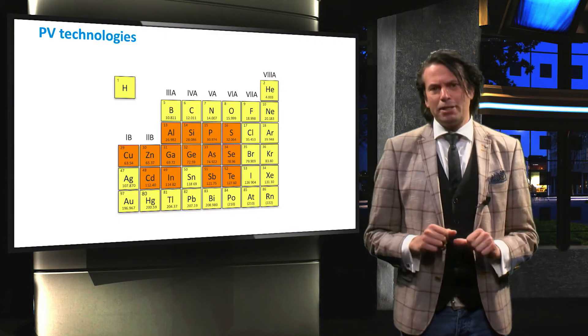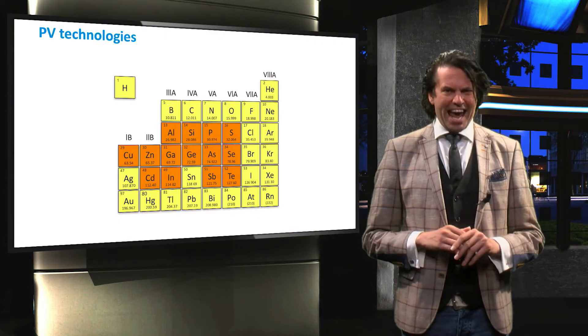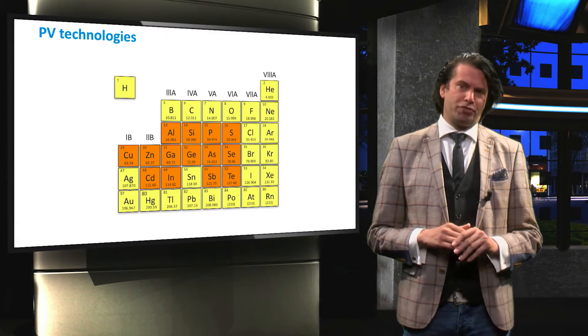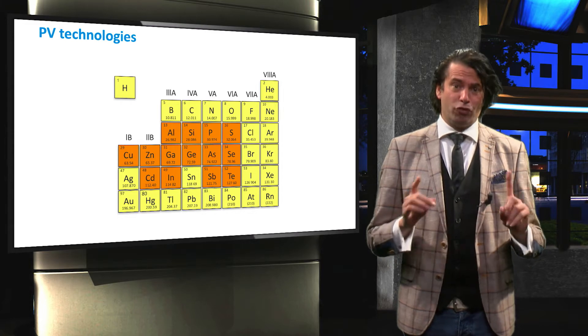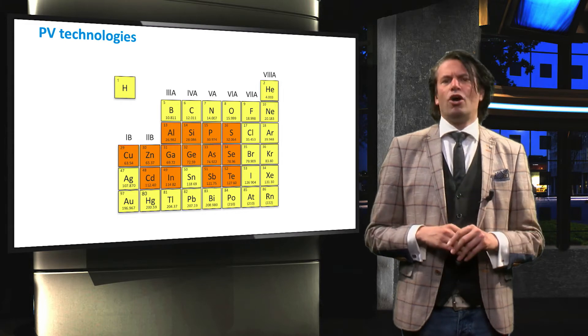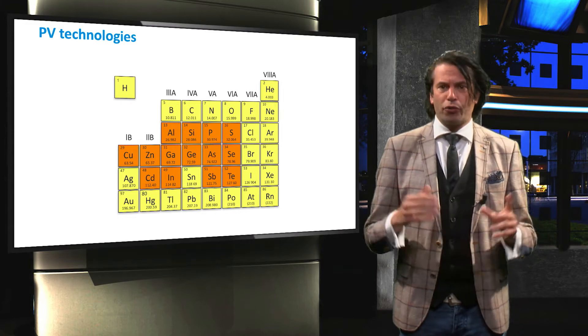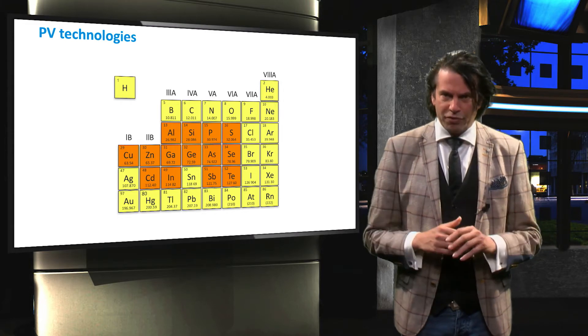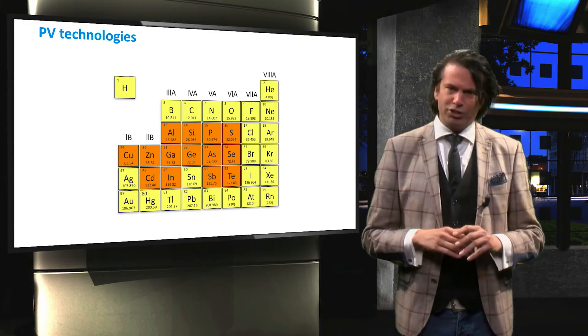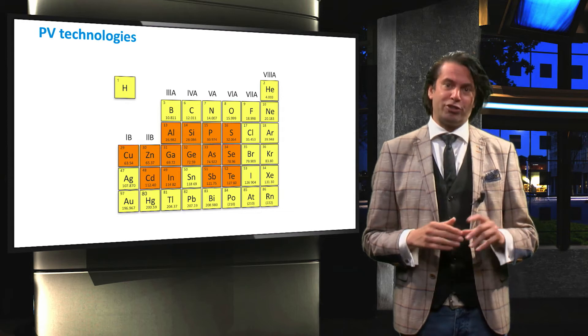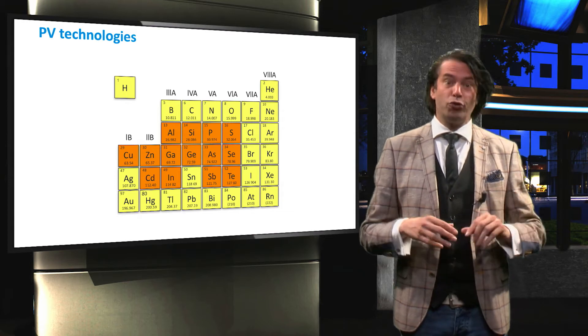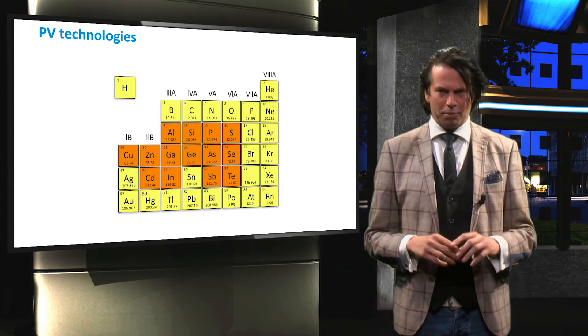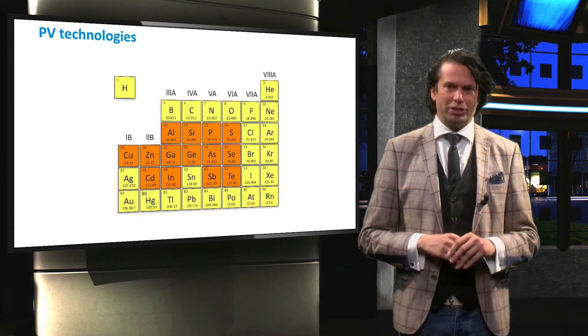As we explained in the PV1x course, photovoltaic energy conversion occurs through the generation of a potential difference at the junction of two different semiconductor materials.